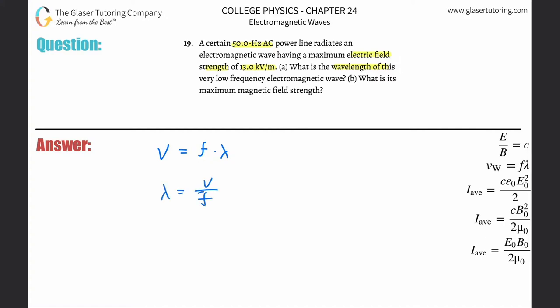I need to know the frequency and the speed. We know the frequency, it told us it's 50 Hertz, so plug in the 50. The velocity - we're going to assume that all electromagnetic waves travel at the speed of light, so it's going to be 3 times 10 to the 8 meters per second.